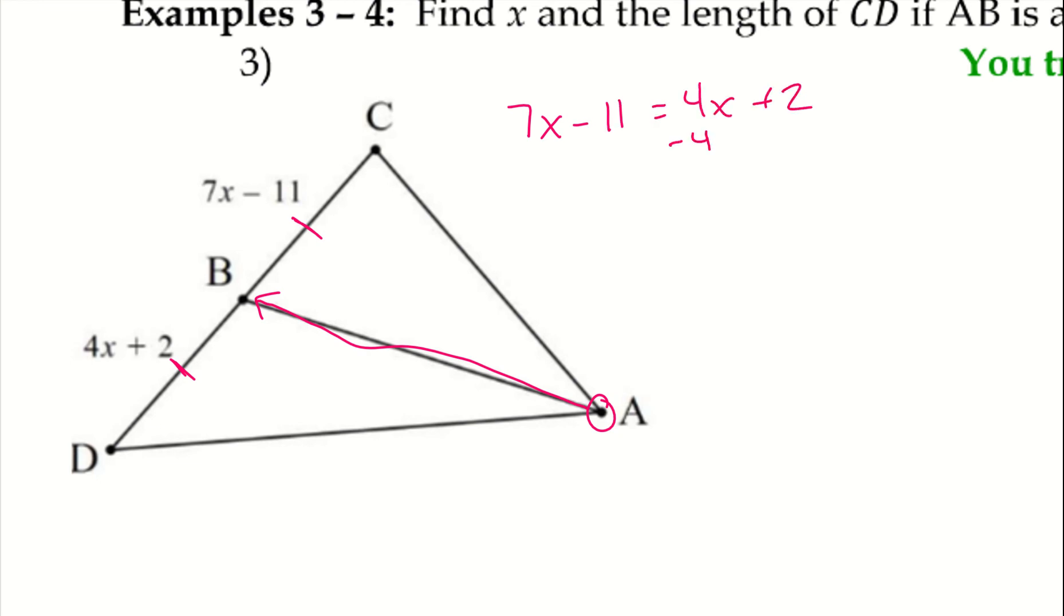I'm going to subtract 4x. We have 3x minus 11 equals 2. Add 11 to both sides, 3x equals 13. Divide by 3, and I can't reduce 13 over 3 so I'm just going to keep it as that fraction. When we have that median we have those two equal parts, so we're able to set them equal to one another because they are in fact equal.